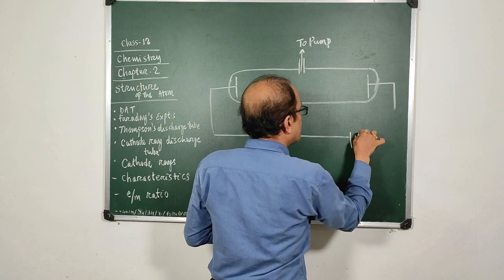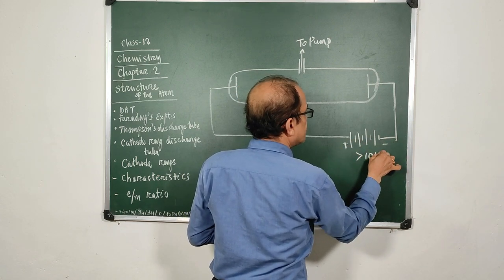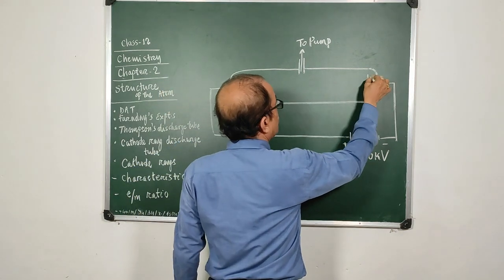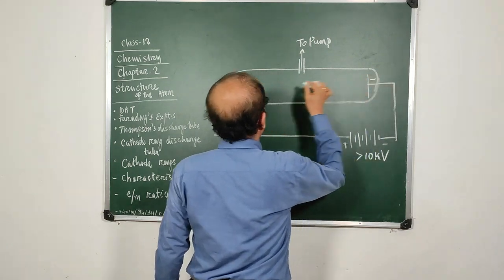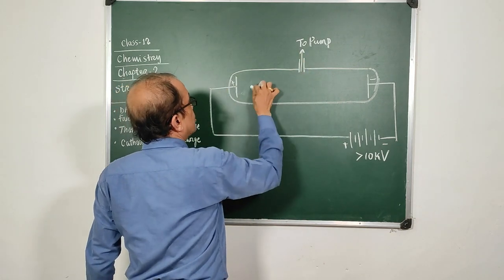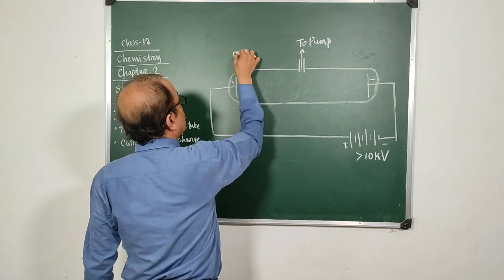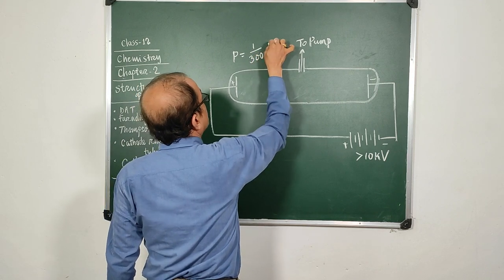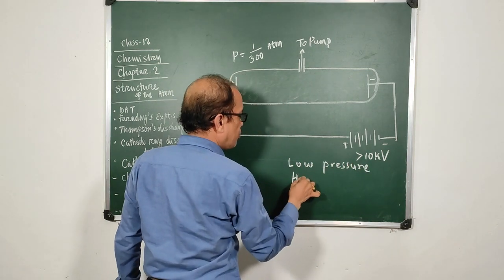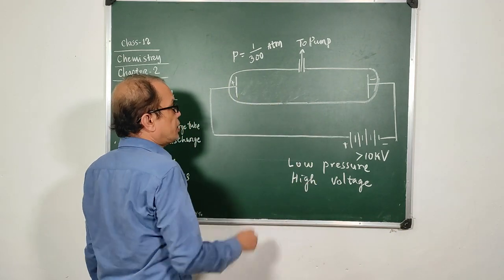He placed two electrodes — electricity-carrying electrodes — and connected them to a very high voltage greater than 10 kilovolts. There was an anode (positive) and a cathode (negative), with a pump set connected to the tube. He inserted a gas inside and then evacuated it to such an extent that the pressure became almost 1/300 of atmospheric pressure. At this very low pressure and very high voltage, he employed the discharge in what is called the cathode ray discharge tube.